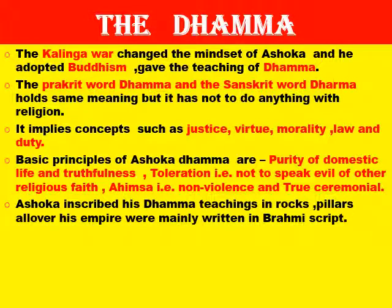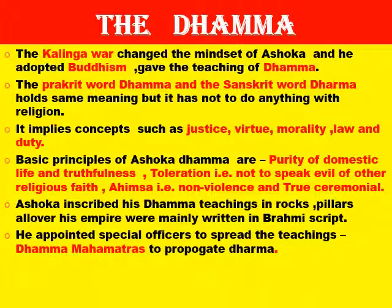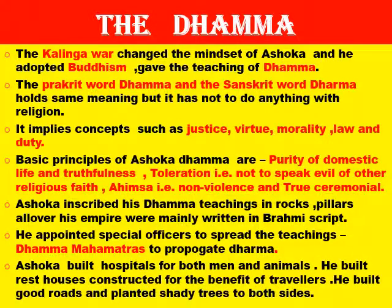Ashoka inscribed his Dhamma teachings on rock pillars all over his empire, mainly written in the Brahmi script. He appointed special officers called Dhamma Mahamattas to travel across his empire to spread the message and check whether people were performing their duties. He built hospitals for both men and animals, rest houses for travellers, good roads, and planted shady trees on both sides of roads to make travel and trade easier.